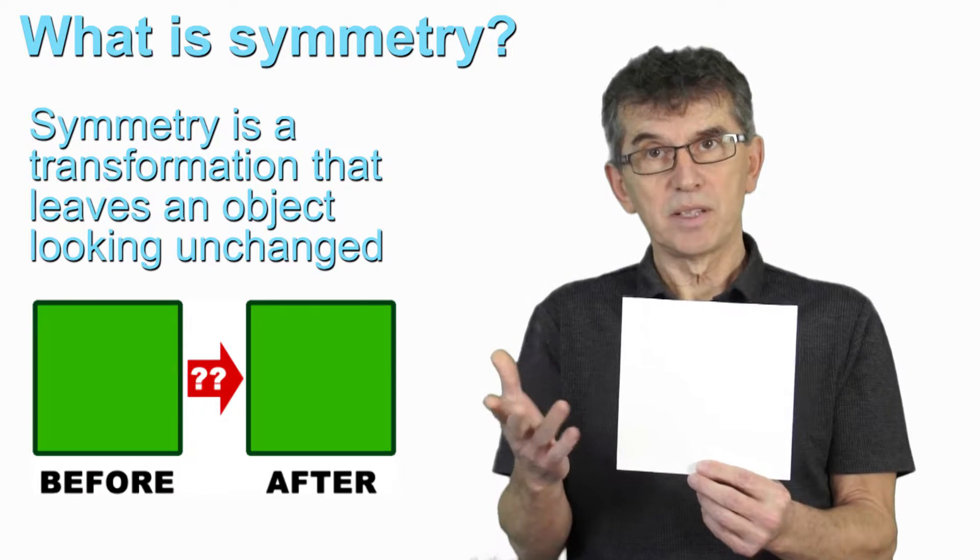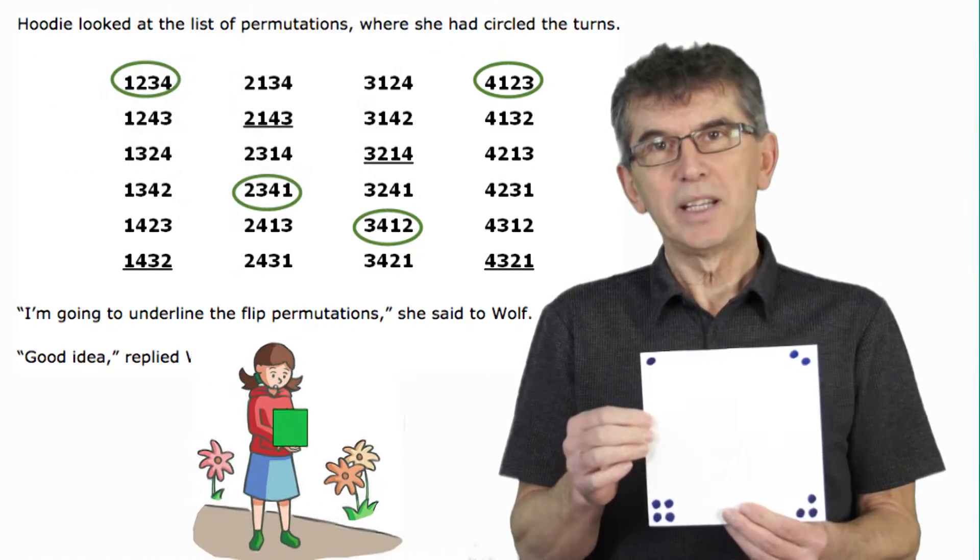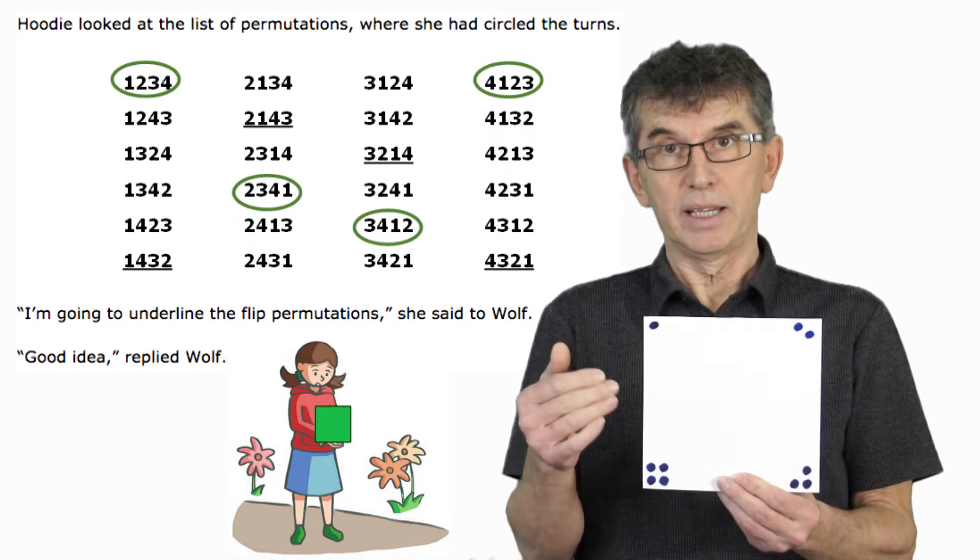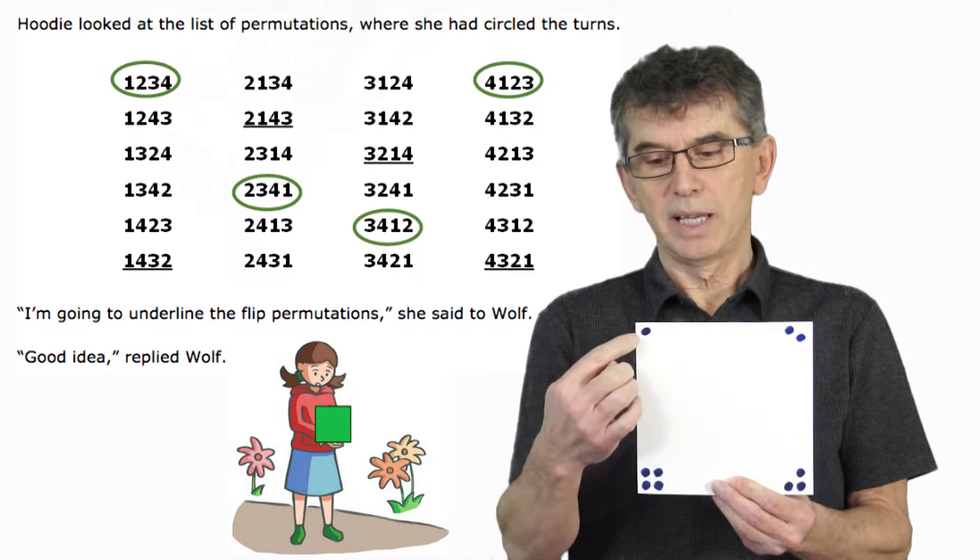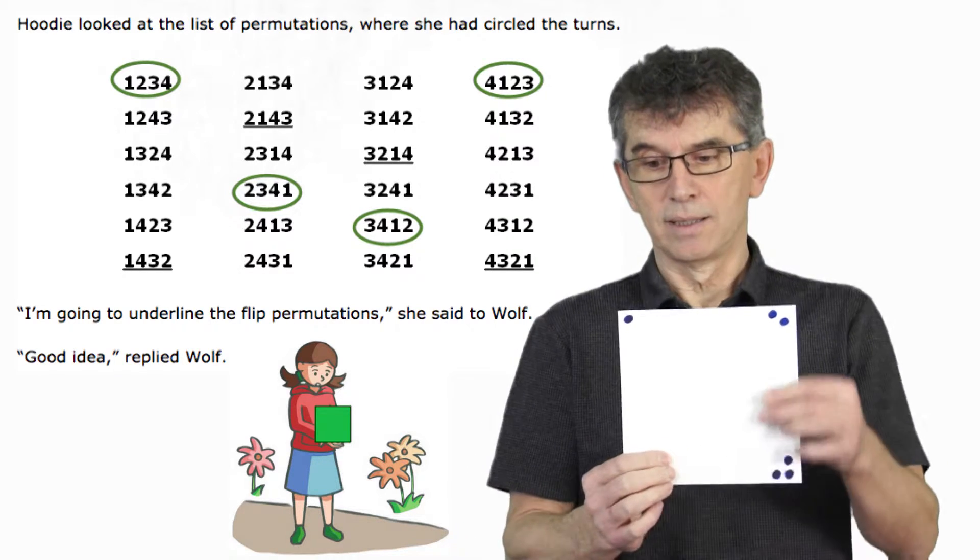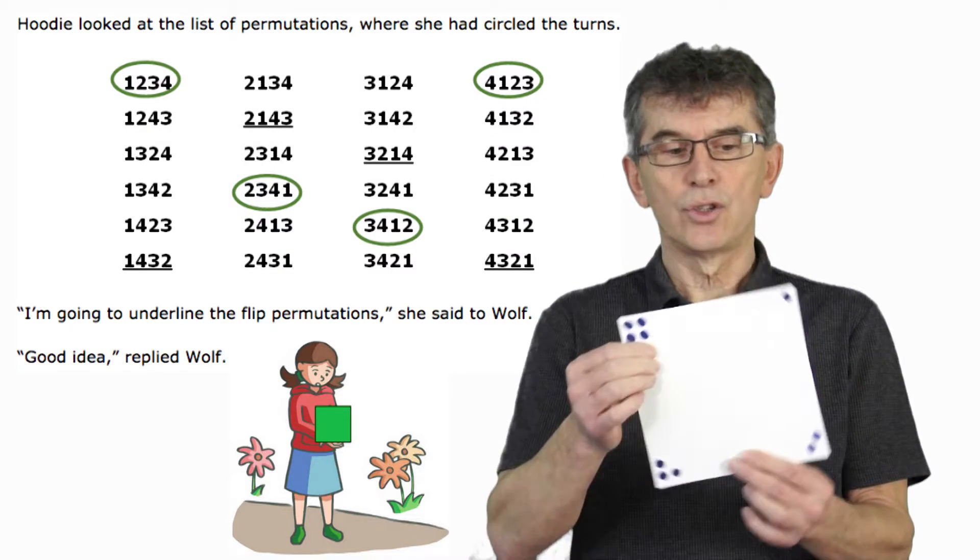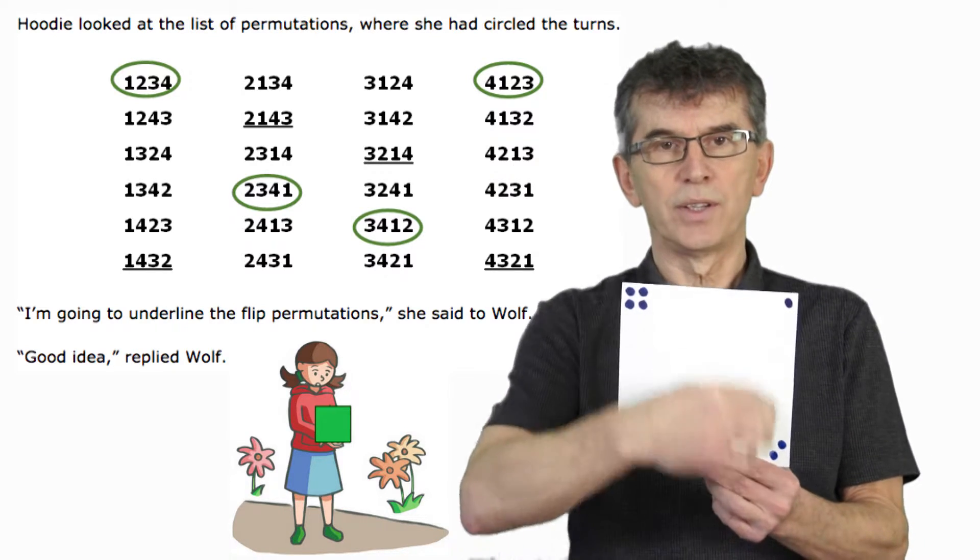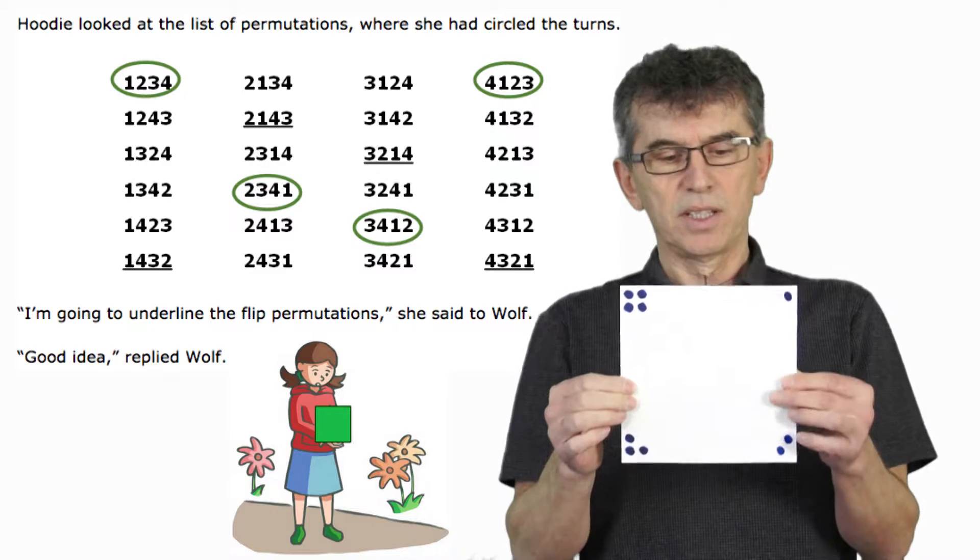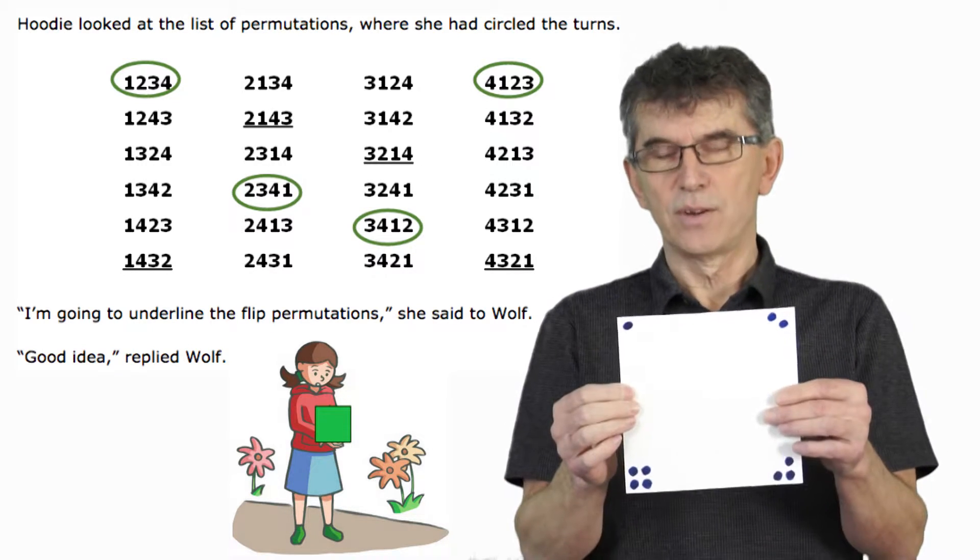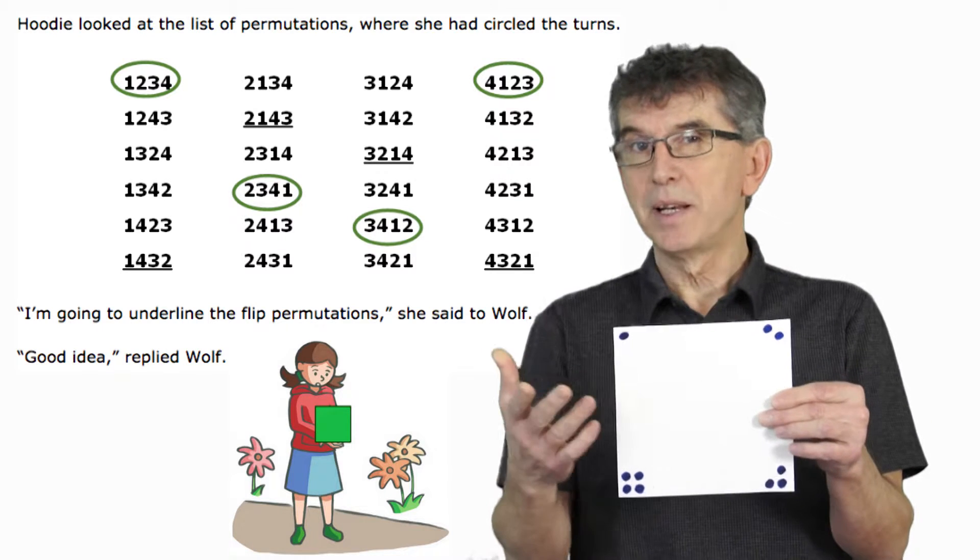And how many of those symmetries are unique? One way to keep track of the different transformations that we can do to a square and still keep it looking the same is to label the vertices. So that when I rotate it, I can see that it changed from 1, 2, 3, 4 to 4, 1, 2, 3. So this is a way to keep track of the different transformations to see that we're not repeating them.